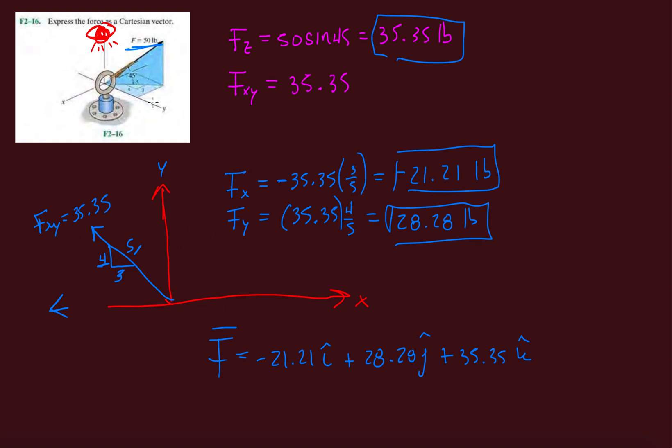And if you want to draw it out, you can move on to the next video if you'd like, but if you want to just visualize this, so we're going 28.28 in this direction. Then we're going negative 21.21 in this direction plus 35.35 in this direction. So it's fx plus fy plus fz gives us this total vector. I hope that helps visualize it.